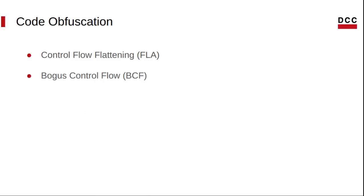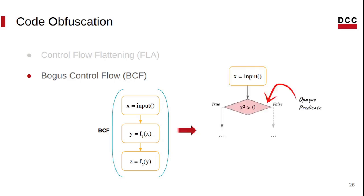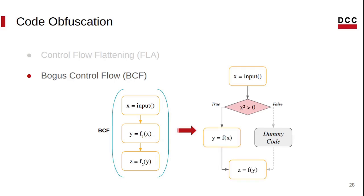Bogus control flow is another obfuscation technique that involves inserting extra jumps to dummy code in the program. These jumps are controlled by conditions that will always be evaluated with the same value, such that the dummy code will never be executed. Here, we have another example of a program. If you apply the bogus control flow technique, a new condition will be inserted, but notice that this condition will always be evaluated as true. We call this type of condition an opaque predicate. Consequently, the branch for the false result will never be executed, meaning that the original program will only be reached by the true branch and the dummy code will never be executed. Of course, this is a silly example, since this type of opaque predicate can be solved at compilation time. Bogus control flow is able to add complex opaque predicates that will never be solved at compilation time.